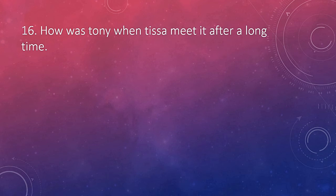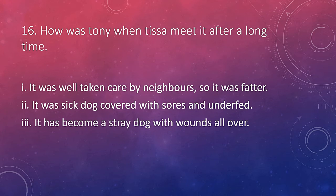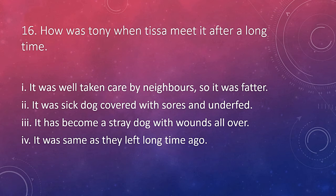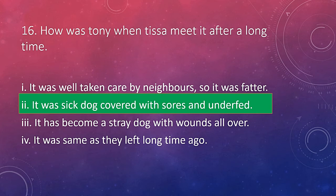How was Tony when Tisha met him after a long time? After some time, when Tisha returns to Deepanama, he meets Tony as a stray dog, completely changed. But his face, loyalty, and affection remain the same. Tony does not smell well anymore; his body was covered with wounds and sores. He was visibly underfed. The answer is: it was a sick dog covered with sores and underfed. This picture is deep-rooted as a scar in the mind of Tisha and keeps haunting him. It further shows what happens to pets when you leave them behind — they become homeless and suffer with no one to love and care for them.